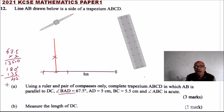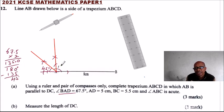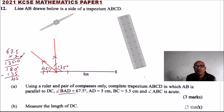Now we can bisect that 90-degree angle. Using this point, make a mark there and a mark there; using the other point, make a mark here. By doing this, since we have bisected the 90-degree angle, this angle becomes 45 degrees. The whole angle is 135 degrees, and if we bisect 135 degrees, we get 67.5 degrees — that is 135 divided by 2. So that is what we are going to do.